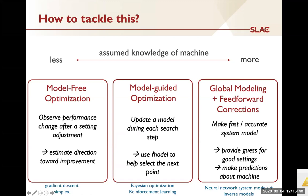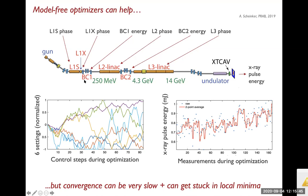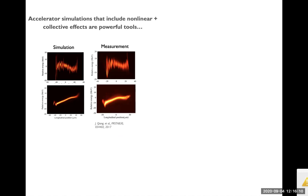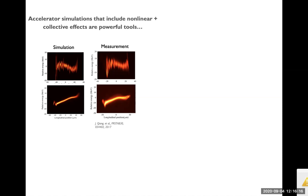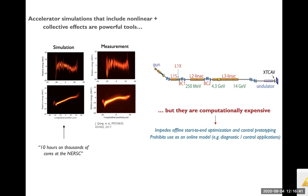From experience we know it is possible to tune many parameters simultaneously using methods that scale well with the number of parameters, but unfortunately some can be very slow to converge and can get stuck in local minima. On the other extreme, we do have good accelerator simulations that with some work can be made to match the accelerator well in some cases, but this is extremely computationally intensive — for example, one run at LCLS took tens of hours on thousands of cores at NERSC.